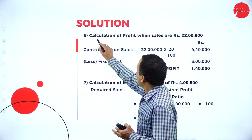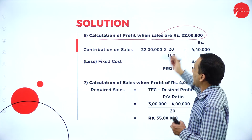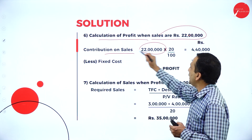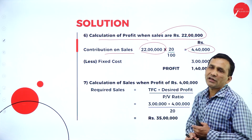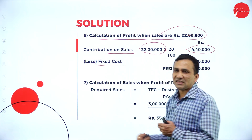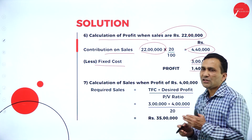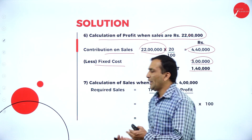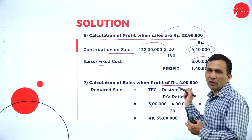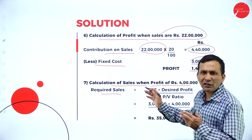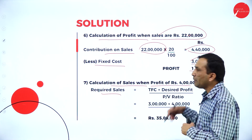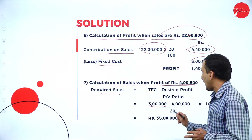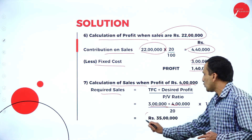Calculation of profit when sales are 22 lakhs: first find contribution — 22 lakhs into PV ratio 20% gives 4,40,000. Subtract fixed cost of 3 lakhs to get profit of 1,40,000. Next, for calculation of required sales when desired profit is 4 lakhs: formula is total fixed cost plus desired profit divided by PV ratio — (3 lakhs + 4 lakhs) divided by 20%, into 100 = 35 lakhs.